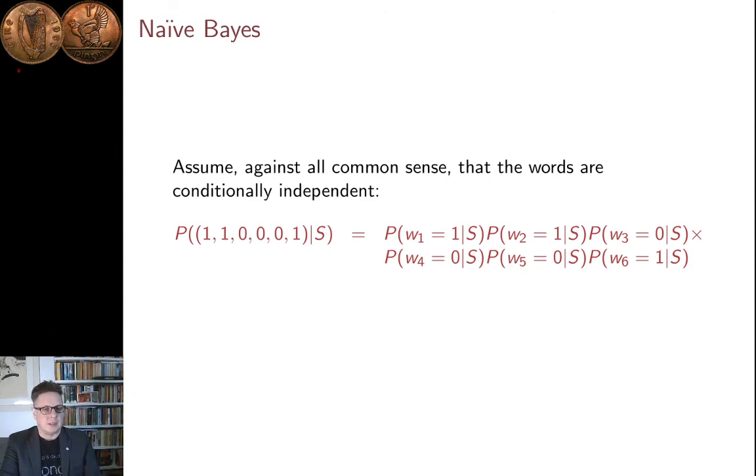And so, what we're doing is we're assuming that the conditional probability of the presence of this word, the presence of that word, the absence of that one, the absence of that one, the absence of that one, and the presence of this one, can be worked out as if these were conditionally independent. In other words, it's the multiple of the probability that this is one, by the probability that this is one given S, of course, by the probability this is zero, by the probability this is zero, by the probability this is zero, by the probability this is one. In other words, we're assuming that conditional independence.